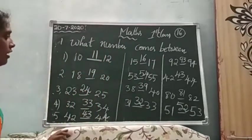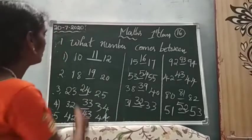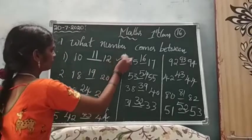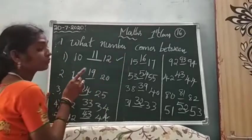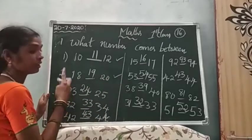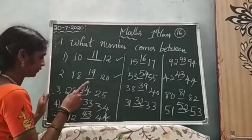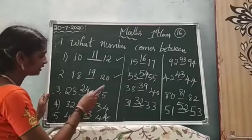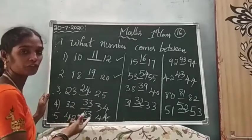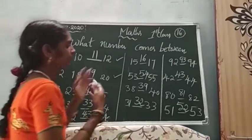Ok children, I will check at once. This is the correct answer now: 10 after 11. 18 after 19. 23 after 24. 25 before — 24. 32 after 33. 34 before — 33. 42 after 43. 44 before — 43.